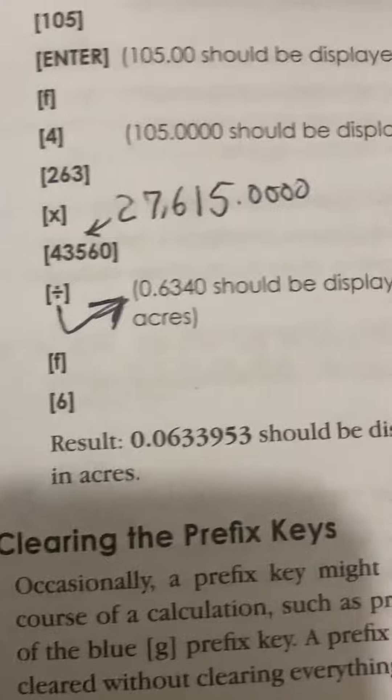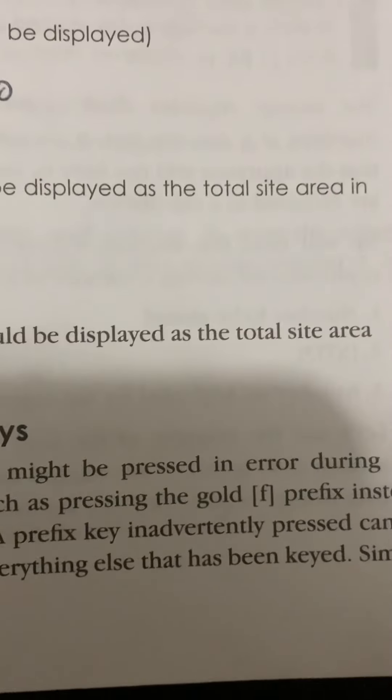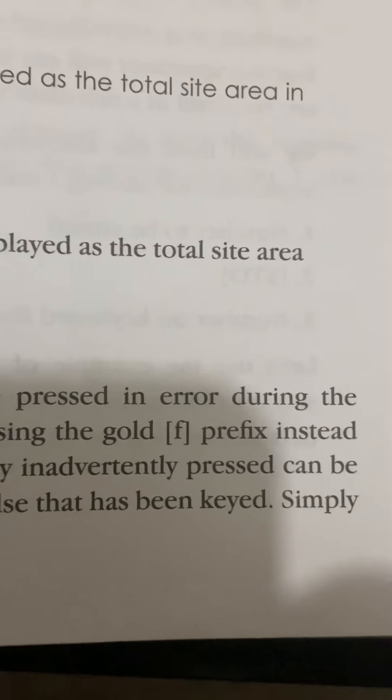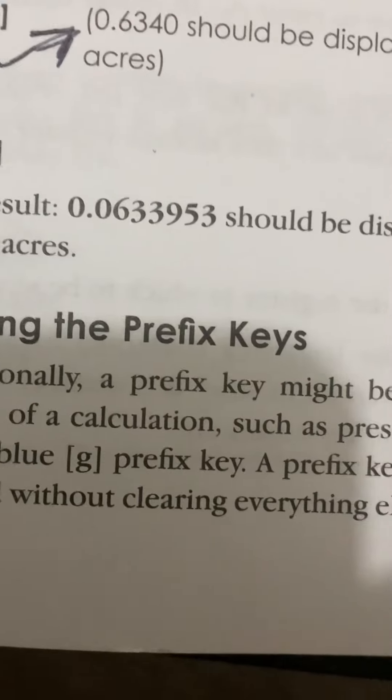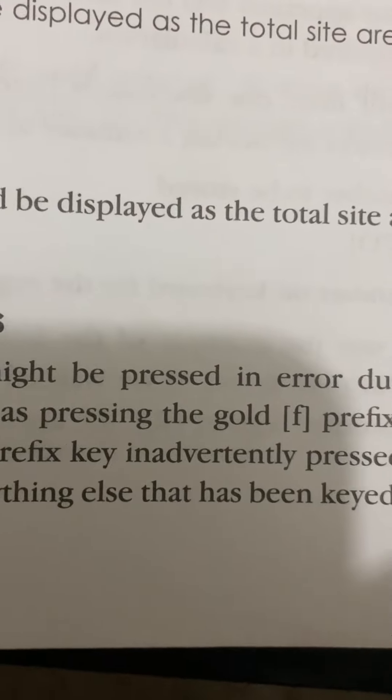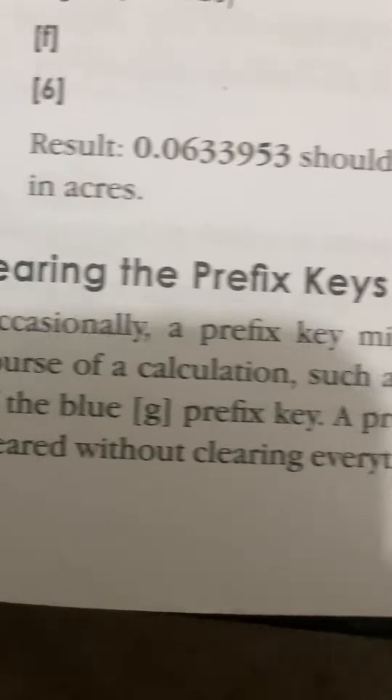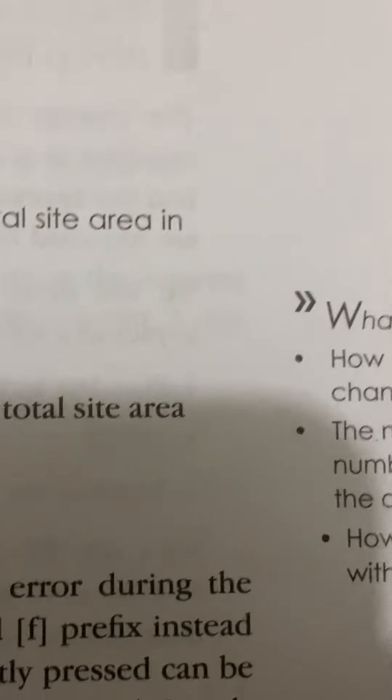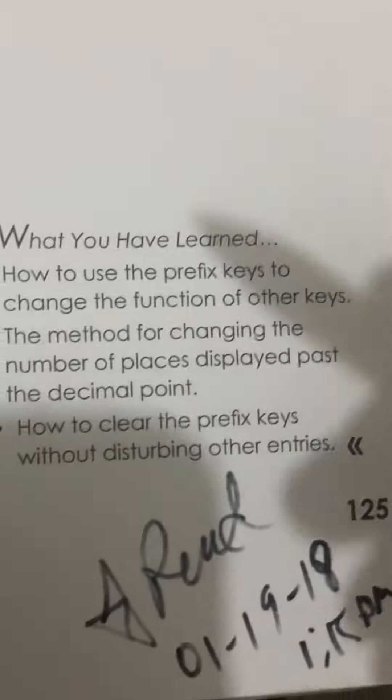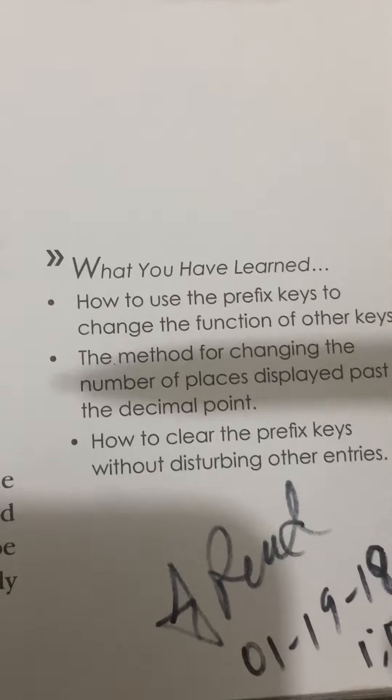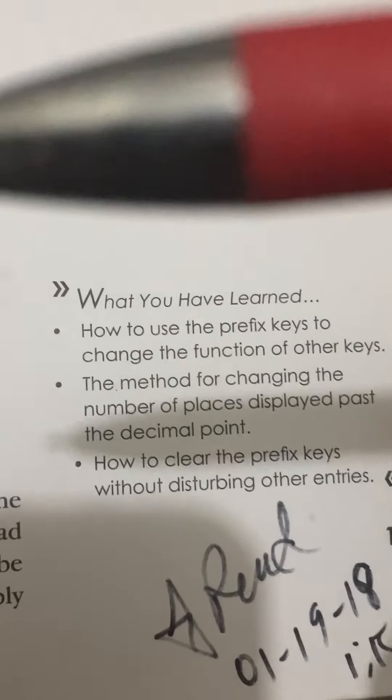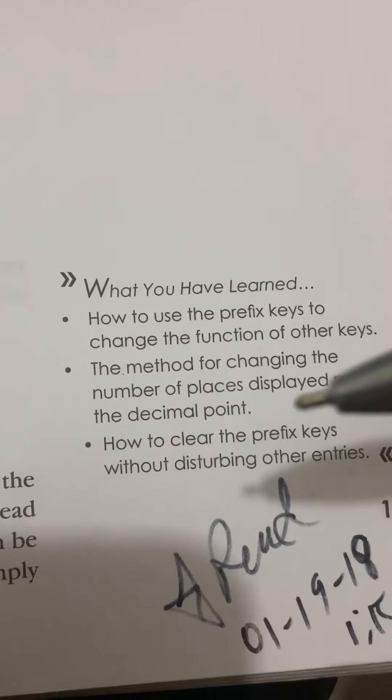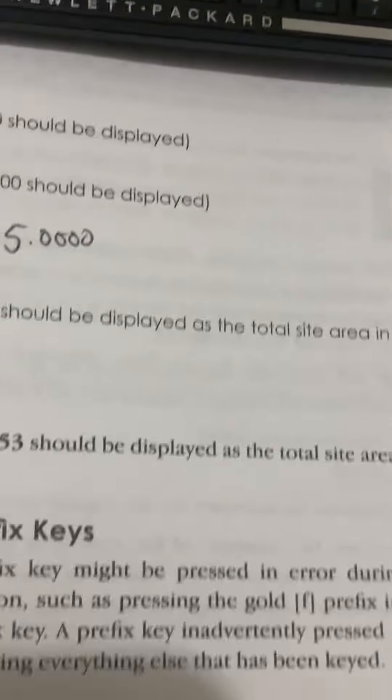Clearing the prefix keys. Occasionally, a prefix key might be pressed in error during the course of a calculation. Such as pressing the gold F prefix instead of the blue G prefix key. A prefix key inadvertently pressed can be cleared without clearing everything else that has been keyed simply. That was the end of the lesson for that page. Except for what you have learned. You have learned how to use the prefix keys to change the function of other keys. The method of changing the number of places displayed past the decimal point. And you have learned how to clear the prefix keys without disturbing other entities. Kind of. We didn't finish that lesson, but we'll work on that one later.